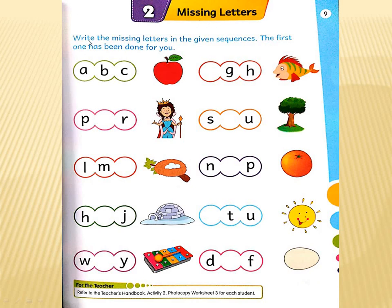Today's topic is missing letters. In book page number 9, missing letters, this is our topic. I am reading the caption right now: write the missing letters in the given sequences, the first one has been done for you. What are we saying? We are saying that we have to write missing letters in this column. They have already done for us.